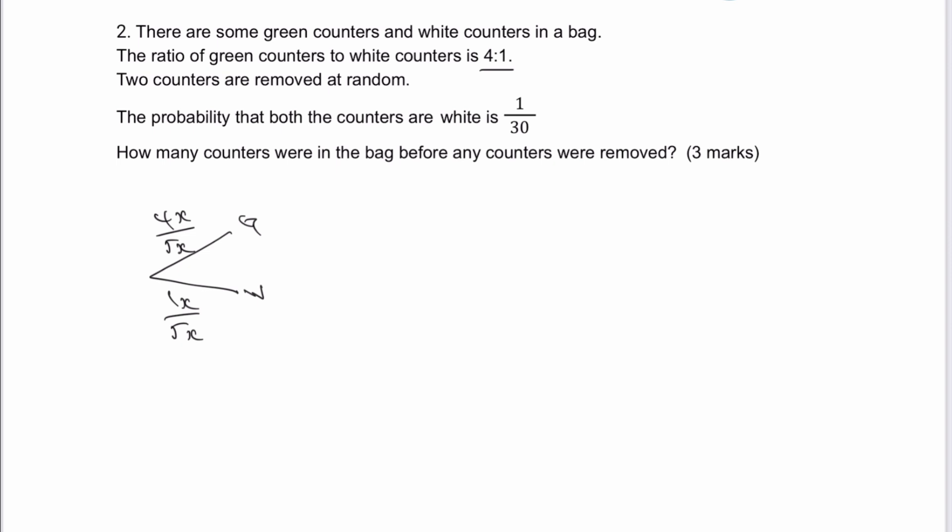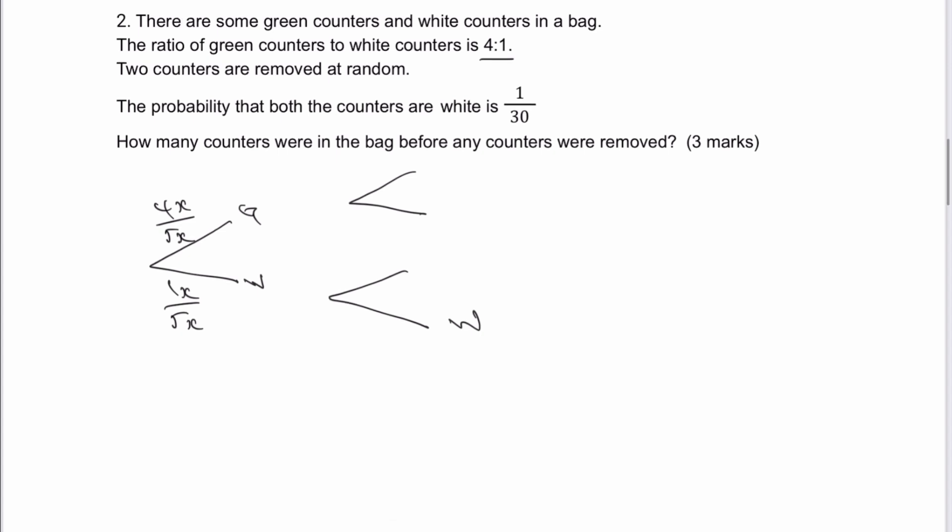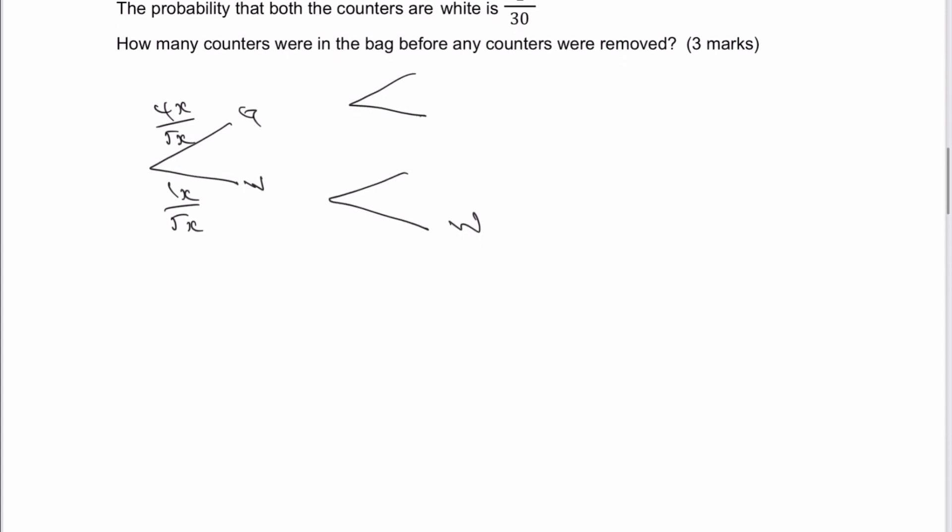Okay, so then we have basically the rest of the probability tree, and we've got this comment that the probability that both counters are white if they pick two white counters. So I'm going to look at that bottom line. So if we've got two white counters, what we're basically saying is the probability for the second white counter we picked is going to be one less white counters.